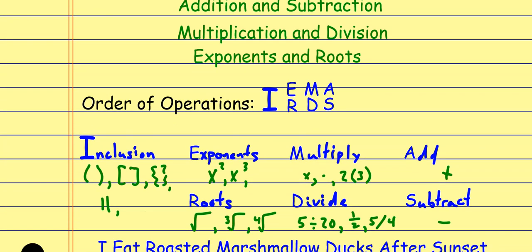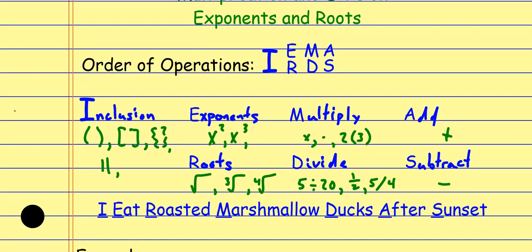If we remind ourselves of order of operations: IRMDAS says we've got inclusion symbols first, then exponents and roots, then multiplication and division, then addition and subtraction. That's the foundation for everything we do in math — we follow order of operations as we simplify.